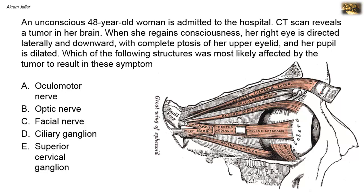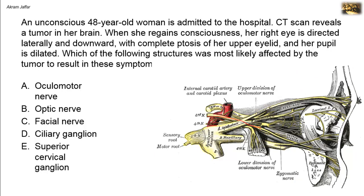These seven muscles are supplied by three cranial nerves. The lateral rectus is supplied by the abducent nerve, and the superior oblique is supplied by the trochlear nerve, while the remaining five muscles — inferior rectus, inferior oblique, superior rectus, levator palpebrae superioris, and medial rectus — are supplied by the oculomotor nerve, the third cranial nerve.